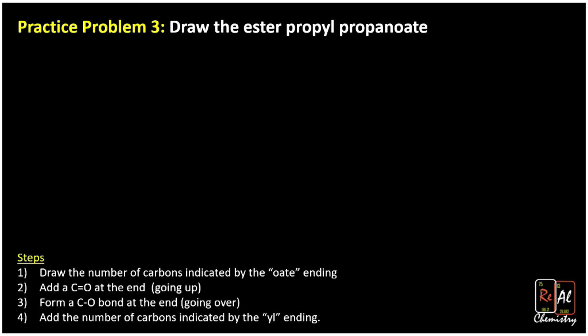Draw the ester, propyl propanoate. Well, you might be able to piece this together by just working backwards and thinking through it, but I've given you a new set of steps here that we can follow. So propyl propanoate, notice both of those are going to have three carbons.